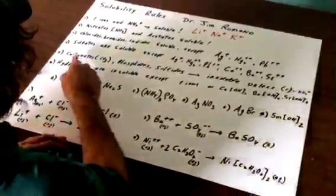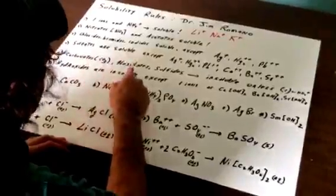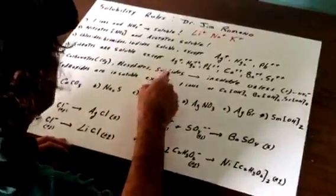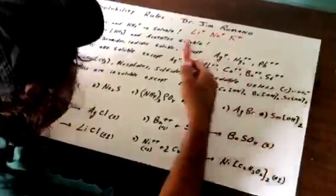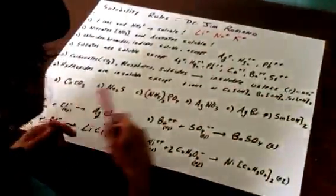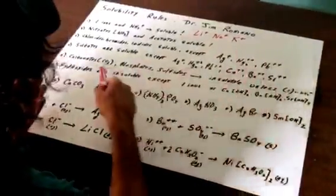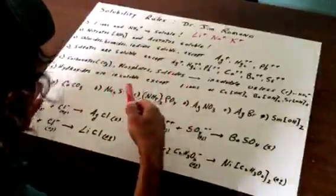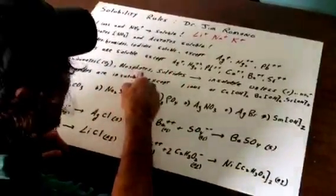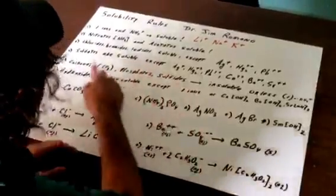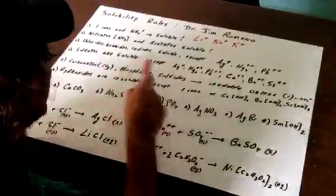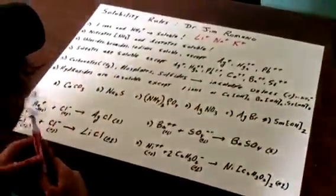All carbonates, phosphates, and sulfides are insoluble unless they contain a group 1 ion or ammonium. So if I gave you sodium carbonate, potassium carbonate, lithium phosphate, sodium sulfide they would all be soluble, but generally speaking they're all insoluble unless that condition is met.